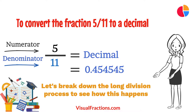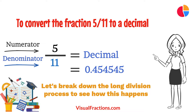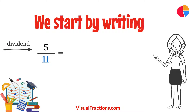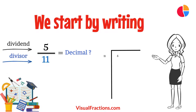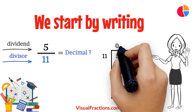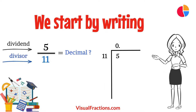Let's break down the long division process to see how this happens. We start by writing 5 as the dividend and 11 as the divisor. Since 11 does not fit into 5, we add a decimal point and append a 0 to 5, making it 50.